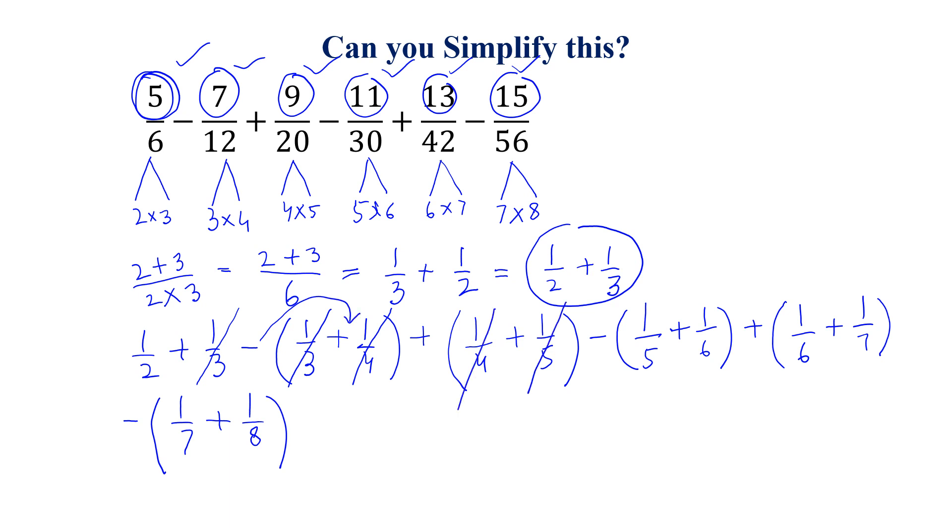and plus 1 over 5 with this minus 1 over 5, and this minus 1 over 6 is cancelled with this plus 1 over 6, and this 1 over 7 is with this 1 over 7,